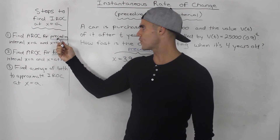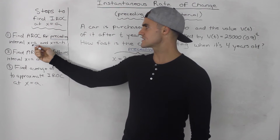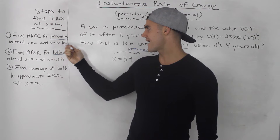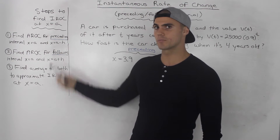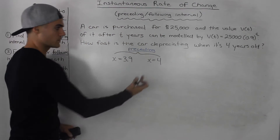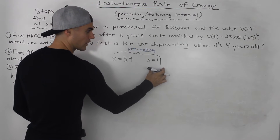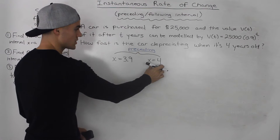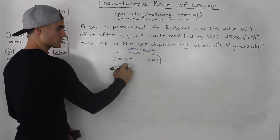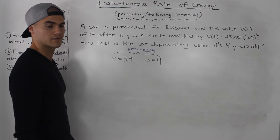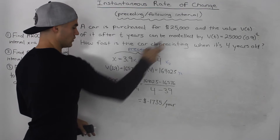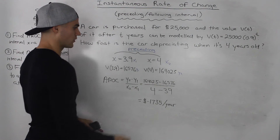Step 1: find the average rate of change for the preceding interval between x = a, or x = 4 in our case, and x = a minus h, or 4 minus some small number h. In this example, I use the h value of 0.1. So we have our x value of 4 where we're finding the instantaneous rate of change, and we pick a point that's less than it and fairly close — so 3.9.